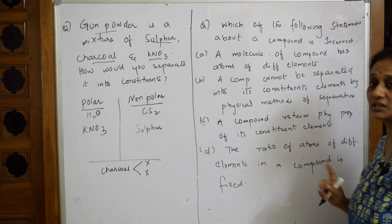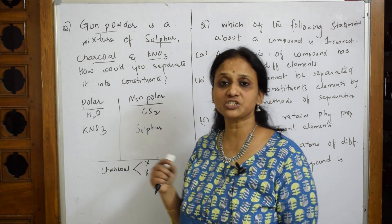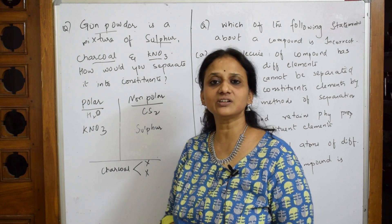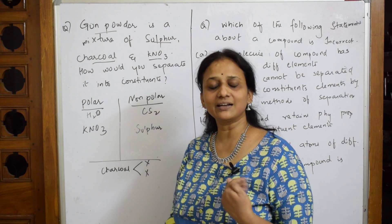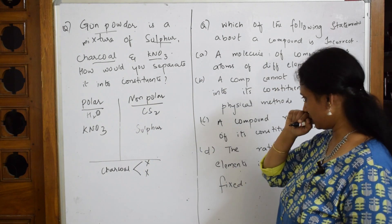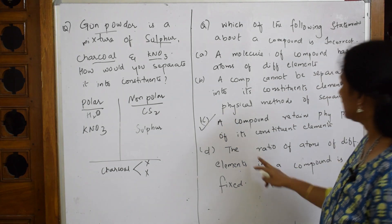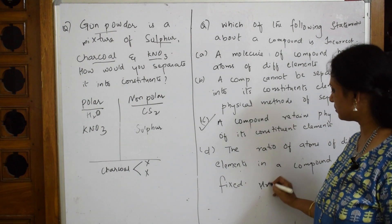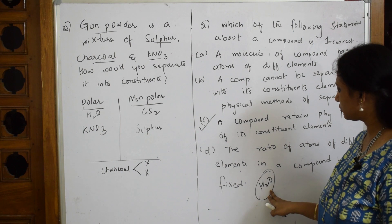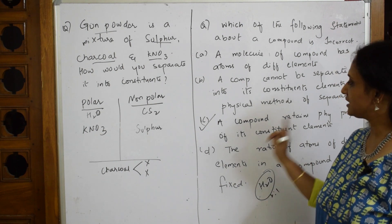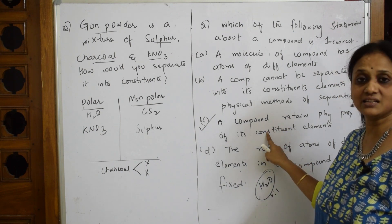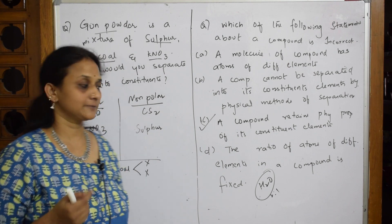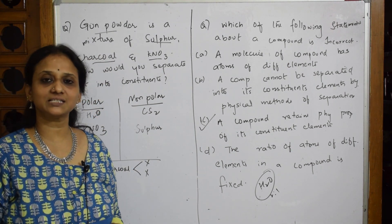Statement C says: a compound retains the physical properties of its constituent elements — that is wrong. For example, iron sulfide when heated changes completely; the structure of iron and sulfur both change and you can't revert back. Statement D: the ratio of atoms of different elements in a compound is fixed — that is correct, like water has a 2:1 ratio. So the incorrect statement is C — a compound does not retain the properties of its constituent elements.